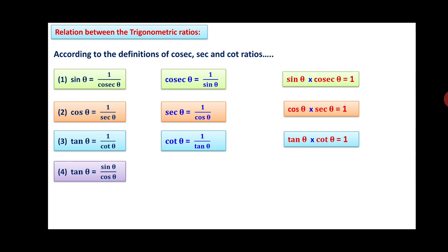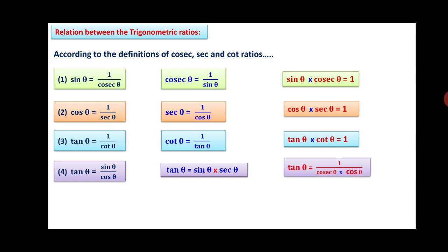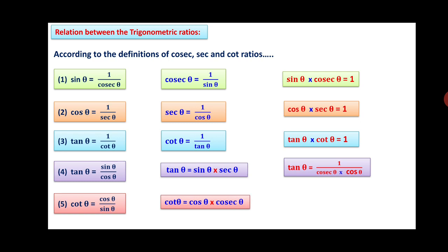Also, tan θ can be written as sin θ / cos θ. Therefore, tan θ = sin θ × sec θ (since 1/cos θ = sec θ), or tan θ = 1 / (cosec θ × cos θ). Similarly, cot θ = cos θ / sin θ, so cot θ = cos θ × cosec θ, or cot θ = 1 / (sec θ × sin θ). These are the 15 relations; if you know the first five basic ones, the others can be derived.